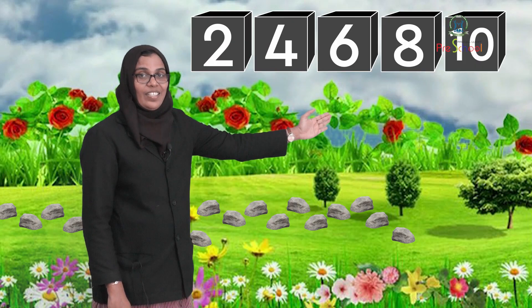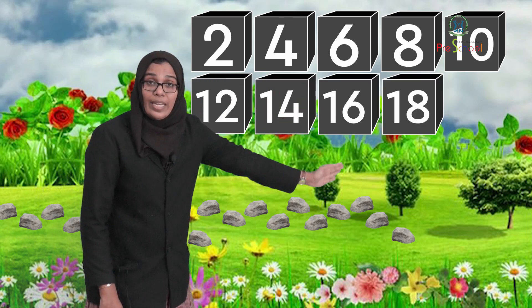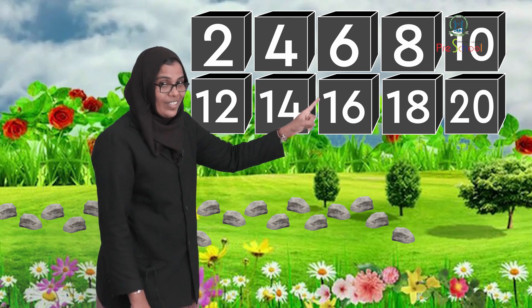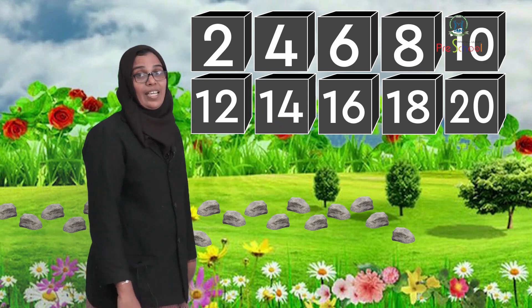Shall I sing a rhyme for you? Just listen. I know you know counting by twos. Two, four, six, eight, ten — twelve, fourteen, sixteen, eighteen, twenty. I know you know counting by twos. Two, four, six, eight, ten — twelve, fourteen, sixteen, eighteen, twenty. Like this you can count up to one hundred: twenty-two, twenty-four, twenty-six, twenty-eight, thirty — and so on.